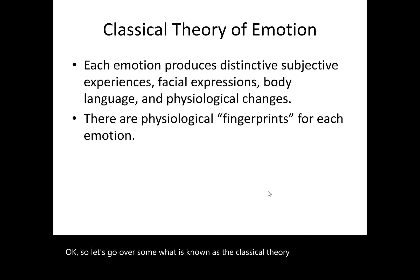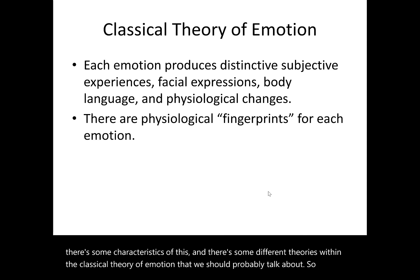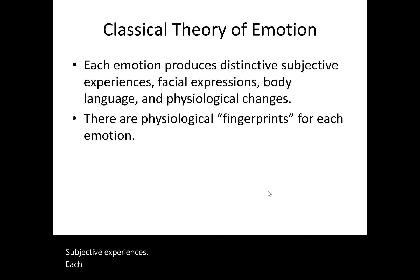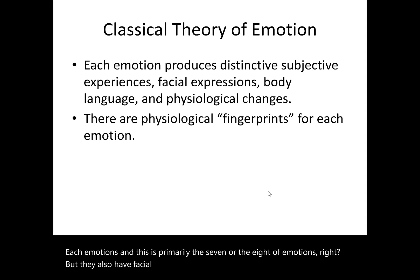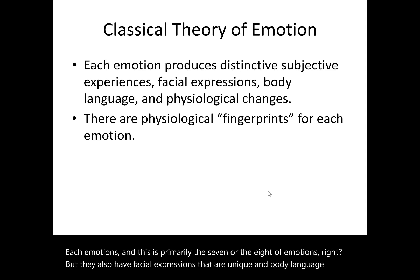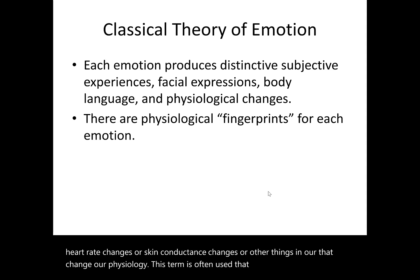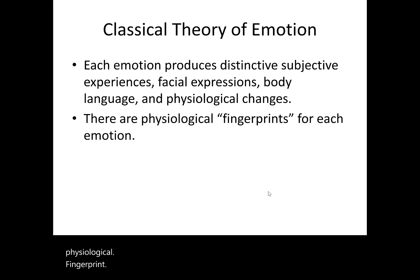Now let's look at what's known as the classical theory of emotion. One key component is that each emotion produces distinctive subjective experiences — primarily the seven or eight basic emotions. They also have facial expressions that are unique, body language, and physiological changes such as heart rate changes or skin conductance changes. This is often described as each emotion having a physiological fingerprint — a characteristic pattern you can identify.